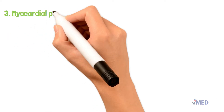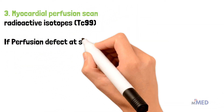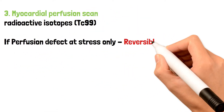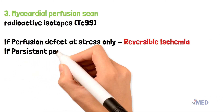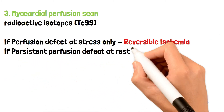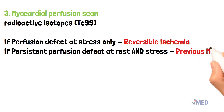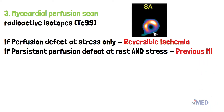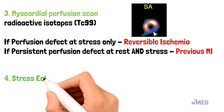We could also do a myocardial perfusion scan using radioisotopes. If there is a persistent perfusion defect at rest plus stress, it is an indication of a previous myocardial infarction, or a history of heart attack. We can also do a stress echo, or a stress echocardiogram.